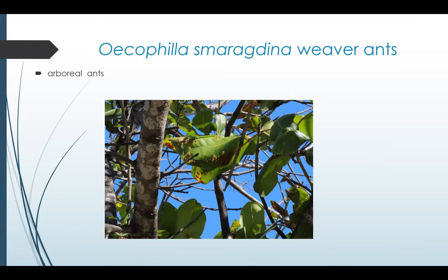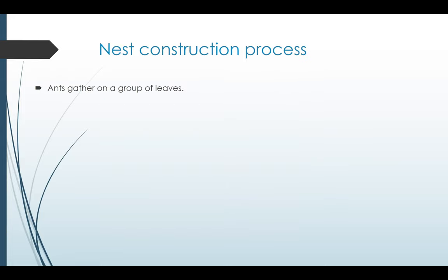While most ant species construct soil nests, Australian weaver ants — Oecophylla smaragdina — are arboreal ants that reside in hollow structures made of leaves. Here you can see an example of such a nest in the foliage of a tree in nature, from Queensland, Australia, on the east side of Australia where they reside.